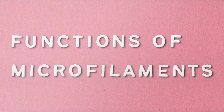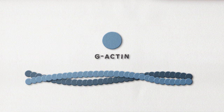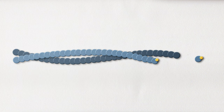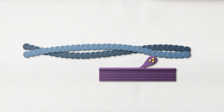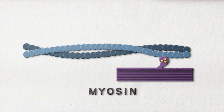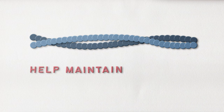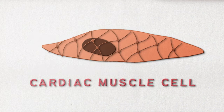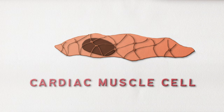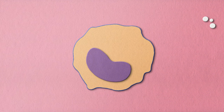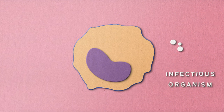Microfilaments as a structure are important, but actin has a lot to do with this too. Actin is run by adenosine triphosphate, or ATP — the molecule that carries energy around cells. ATP encourages actin to assemble into its microfilament form, which in turn helps other proteins like myosin move along the cell. Much like the other filaments in the cytoskeleton, microfilaments help maintain the shape of the cell and assist in the contracting of muscle cells.